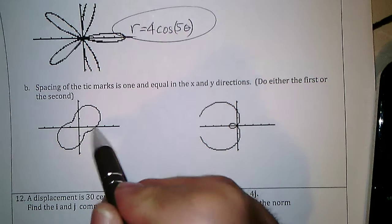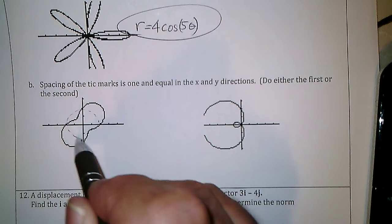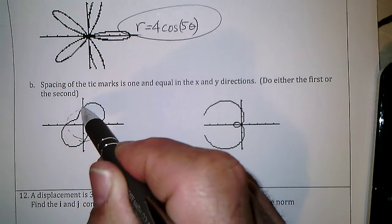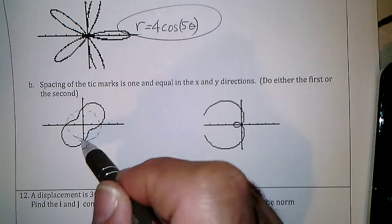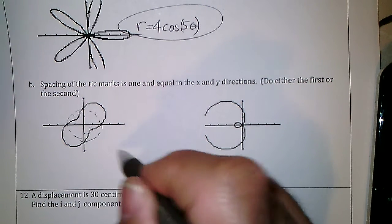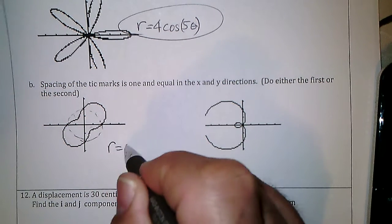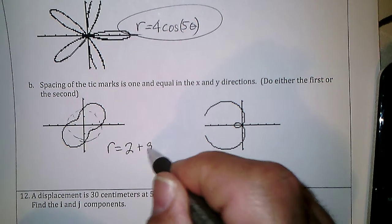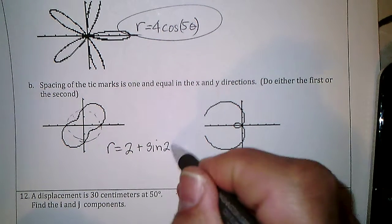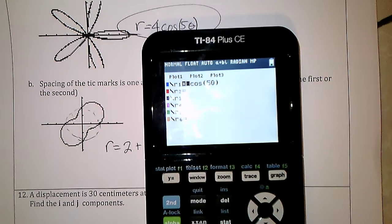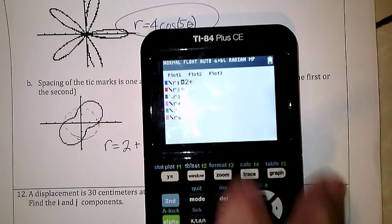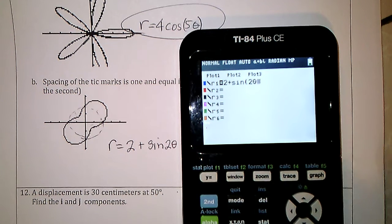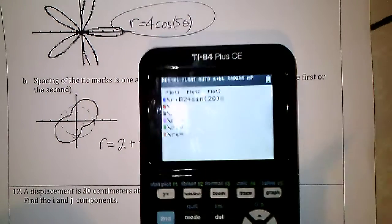This one looks like it's based on a circle of radius 2. It starts on the circle, goes out one, then comes in one, then out one, then in one. Starting on the circle sounds like sine, and the circle is 2. Since it does twice around, probably 2θ. Trying r = 2 + sin(2θ) — with parentheses — that works.